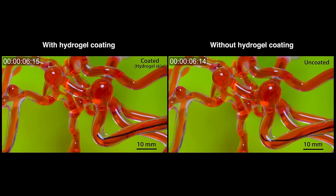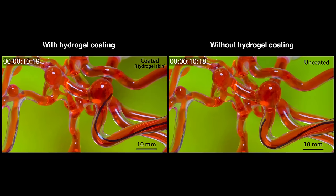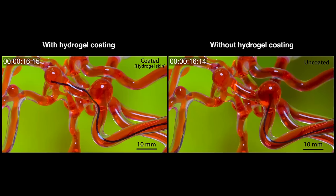The team filled the silicone vessels with a liquid simulating the viscosity of blood, then manually manipulated a large magnet around the model to steer the robot through the vessel's winding, narrow paths.